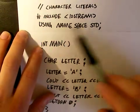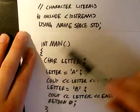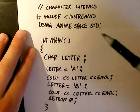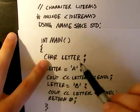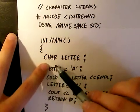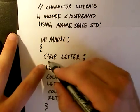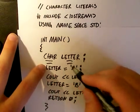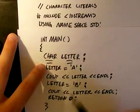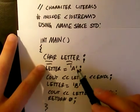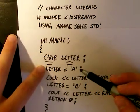Here we have our library, our namespace std, this is our main function going on here. Here we have the character letter, this is a variable letter being defined as a character. The data type, remember this is the data type, this is the variable. In this case the variable is letter. Letter we are defining as A.